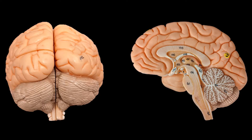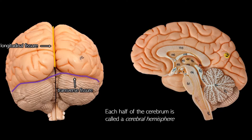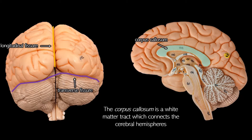Now we're looking at the posterior view. Sulci are just wrinkles in the cerebrum, but we also have fissures, which are larger cracks separating entire structures. The transverse fissure going side to side separates the cerebrum from the cerebellum. The longitudinal fissure separates the right half and the left half of the cerebrum, and we would call each half a cerebral hemisphere. The hemispheres are mostly separate, but they're connected at the midline by the corpus callosum. This is a white matter tract — a bundle of axons allowing impulses to pass between the right and left hemispheres. Sometimes this structure might be cut in somebody with a seizure disorder to prevent a seizure from spreading from one hemisphere to the other.